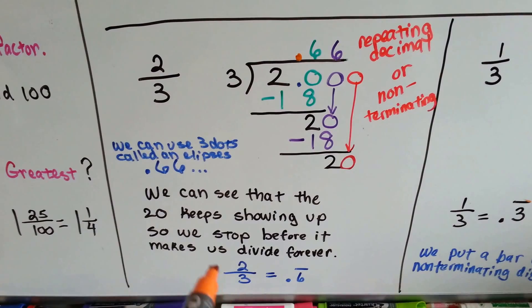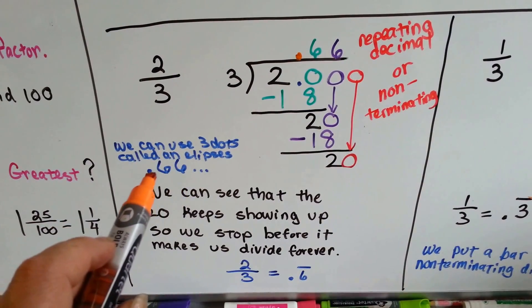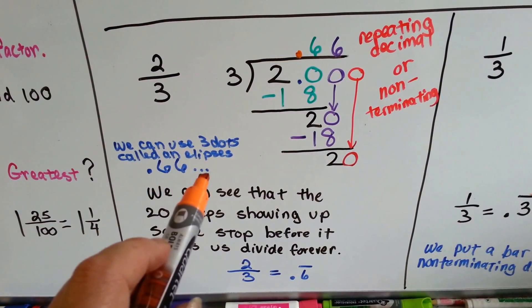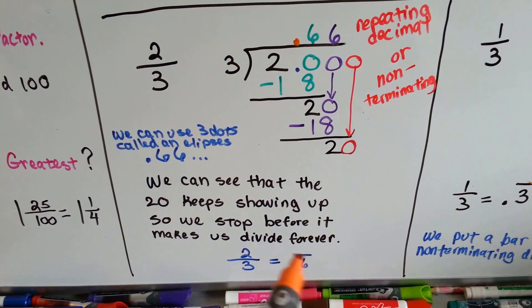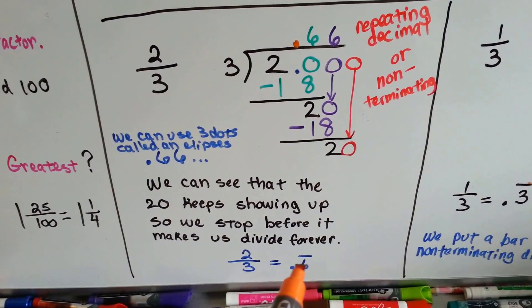Well, what we do is, we can use three dots, called an ellipsis, and just do point dots, or we can say that it's .6, and we put a bar over the top of it, indicating that the six is going to repeat.